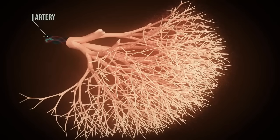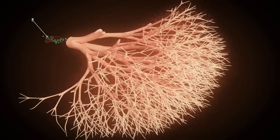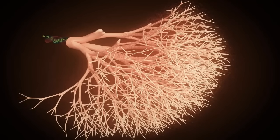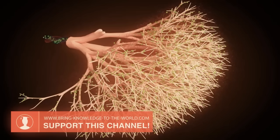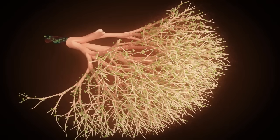However, waste products also reach the villi via the arteries. This allows the fetus to release its waste products, such as carbon dioxide and urea, into the maternal blood. The mother's organism then takes over the excretion of these substances.